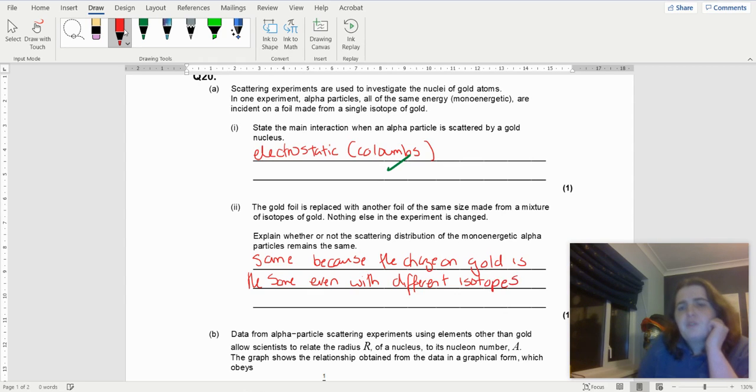So this is important to realize is that the reason it scatters is because it's all about charge. If you get isotopes of gold, they have the exact same charge as gold.